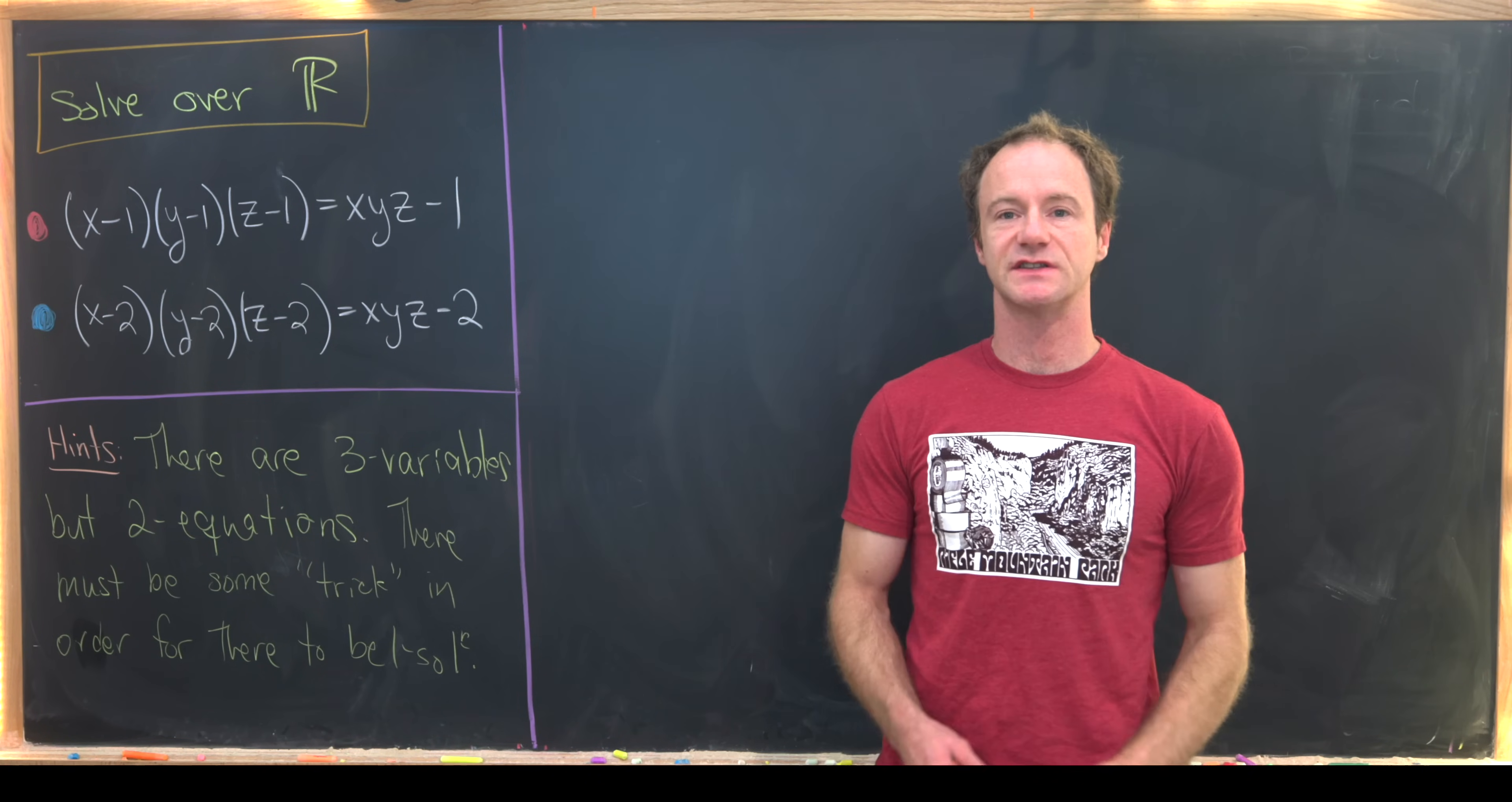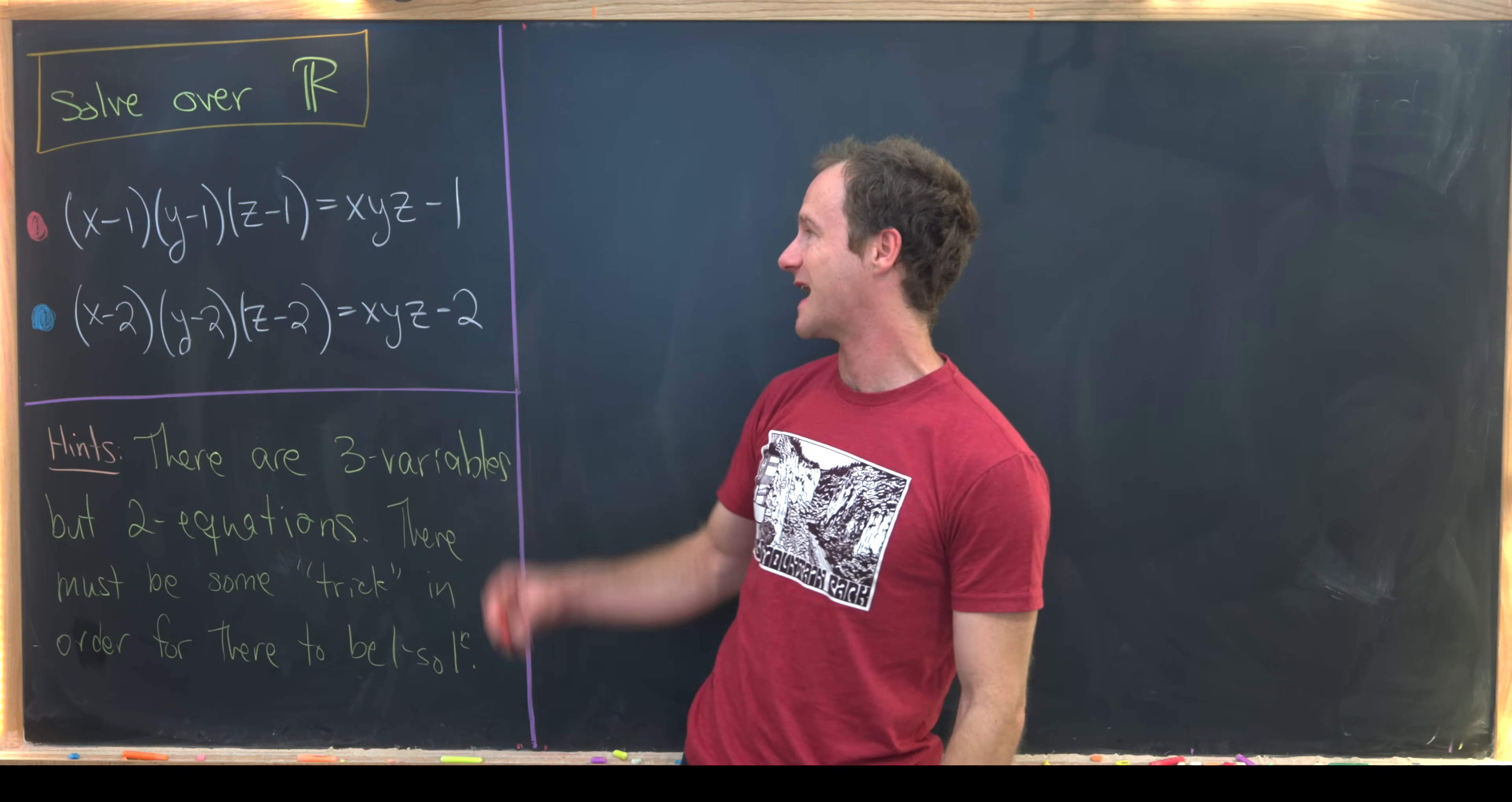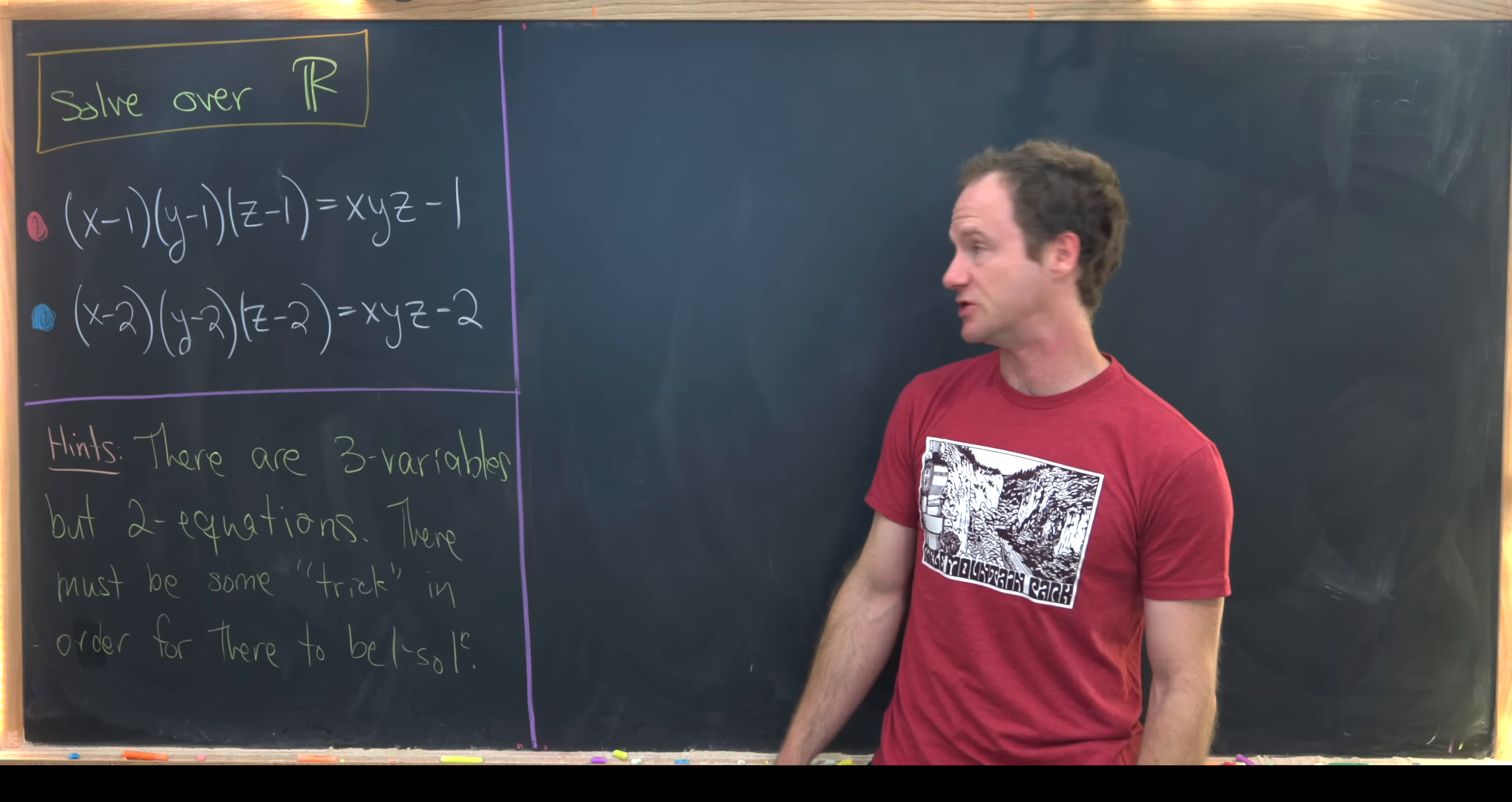Here we're going to look at a nice non-linear system of equations. We want to solve it over the real numbers. The first equation is (x-1)(y-1)(z-1) = xyz - 1, and the second one is (x-2)(y-2)(z-2) = xyz - 2.